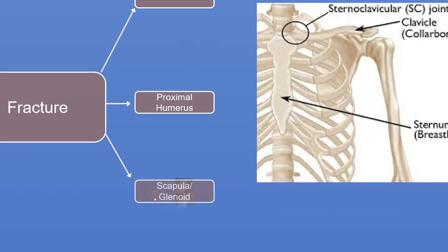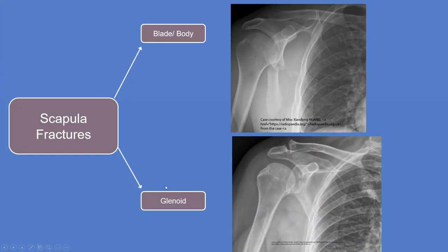When it comes to a fracture of the scapula or glenoid, it's much easier. It either involves the whole scapula blade or body — and because of the good blood supply around the scapula this usually heals quite well — or it can involve the glenoid surface. In this scenario there's articular deformity that can lead to arthritis later in life, or if the fragment is displaced it could make the shoulder prone to dislocation because some of the glenoid is missing.